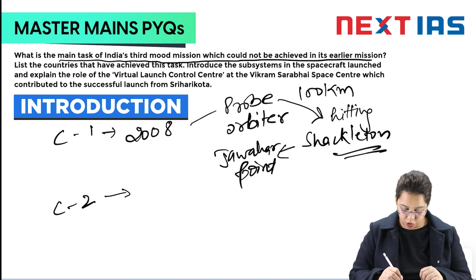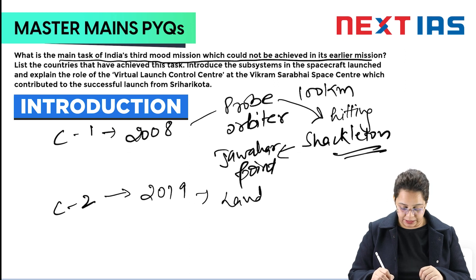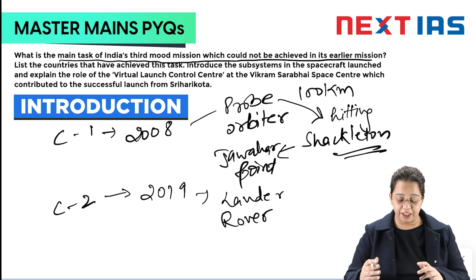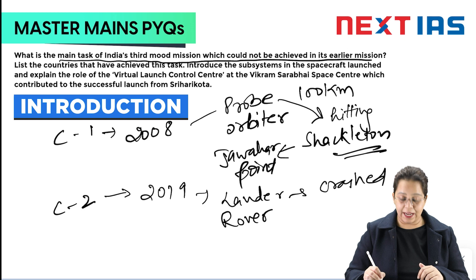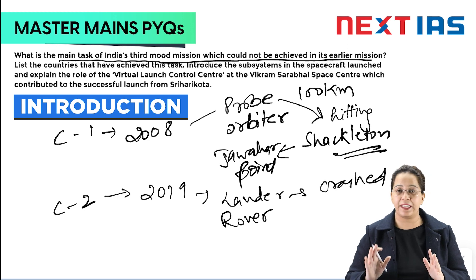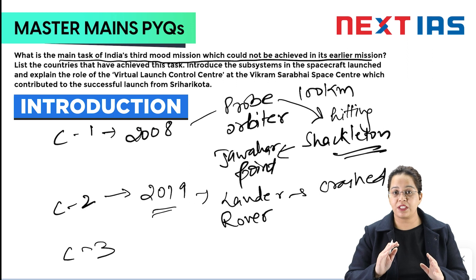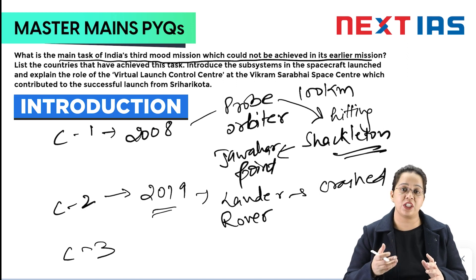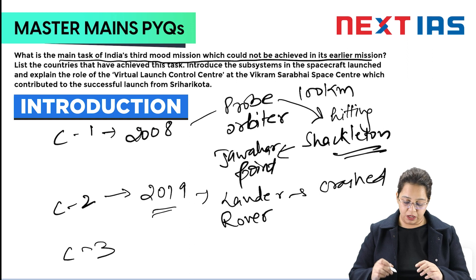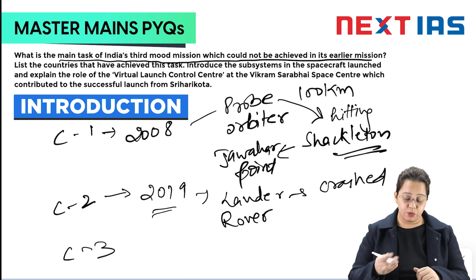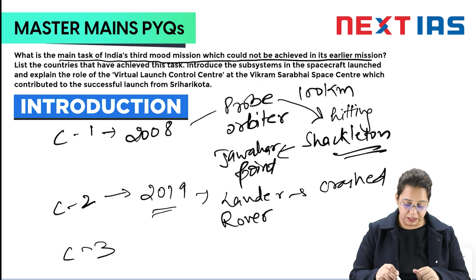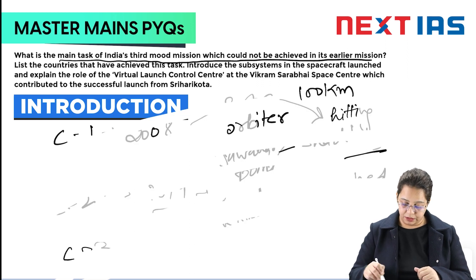Chandrayaan 2 was launched in 2019. It had a lander and rover, but the mission did not achieve its target because the lander crashed — it deviated from its intended trajectory. So we did not get success in this mission. Then came Chandrayaan 3, in which we achieved some basic objectives that we didn't achieve in the previous missions.